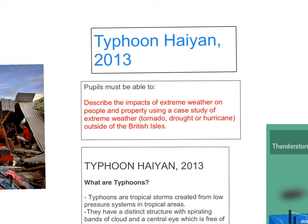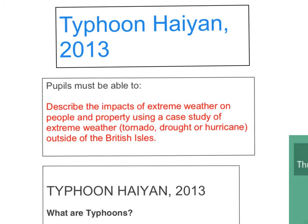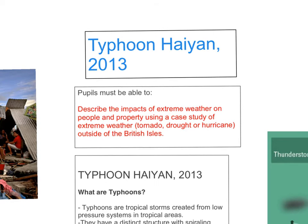The specification requires that students must be able to describe the impact of extreme weather on people and property using a case study of extreme weather — tornado, drought or hurricane — outside of the British Isles. So we are going to use a typhoon. A typhoon is the same as a hurricane, just a different name in different parts of the world, and we'll look at that later in a little bit more detail.